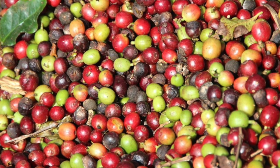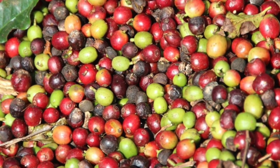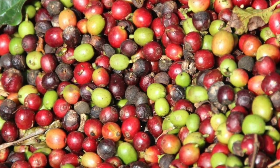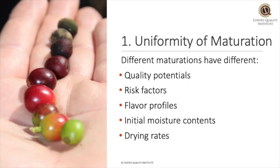Another reason is that different maturations have different flavor profiles. While perhaps the most obvious of these is the astringency of unripe coffee, many growers have been separating out overripe or raisin coffee when the fruit has very dark cues but still has some of the mucilage present, because of its unique flavor profile. Finally, along with different quality and flavor potentials, different maturations have different initial moisture contents and will dry at different rates because of the state of the various tissues that surround the bean. For example, overripe or dried-on-tree coffee has a much lower moisture content and will dry more quickly than ripe and underripe coffee. We will look at this more when we look at uniformity in drying.